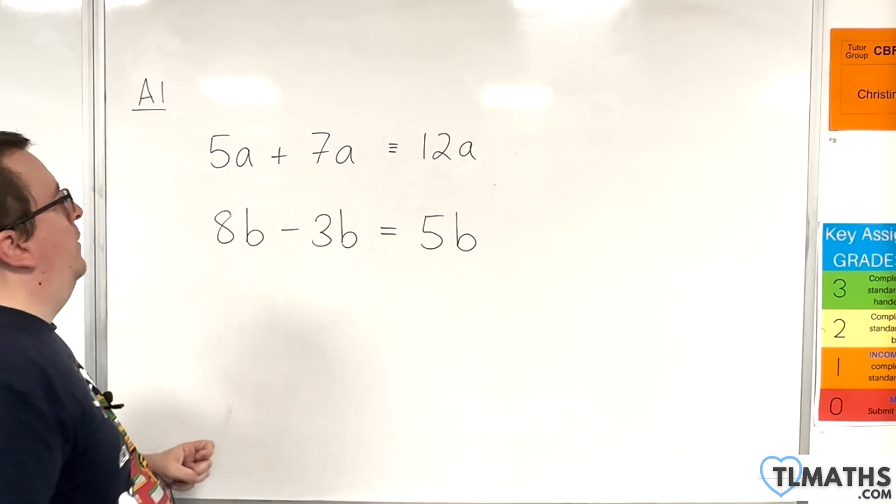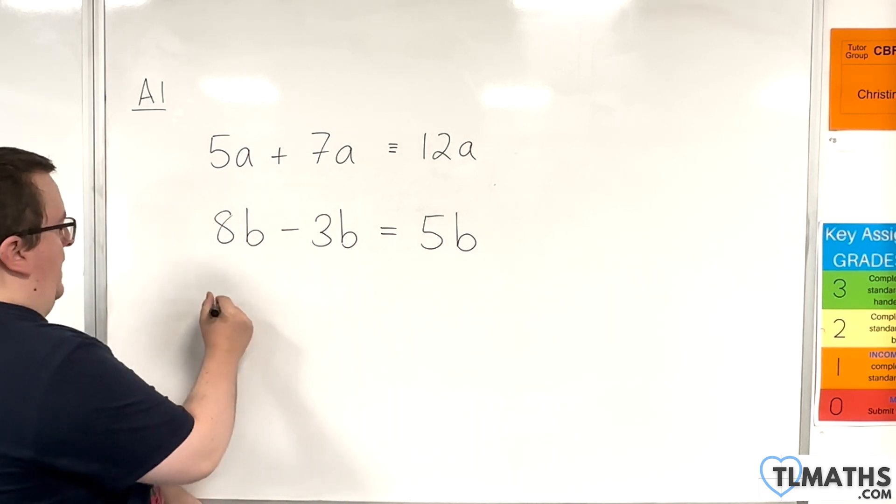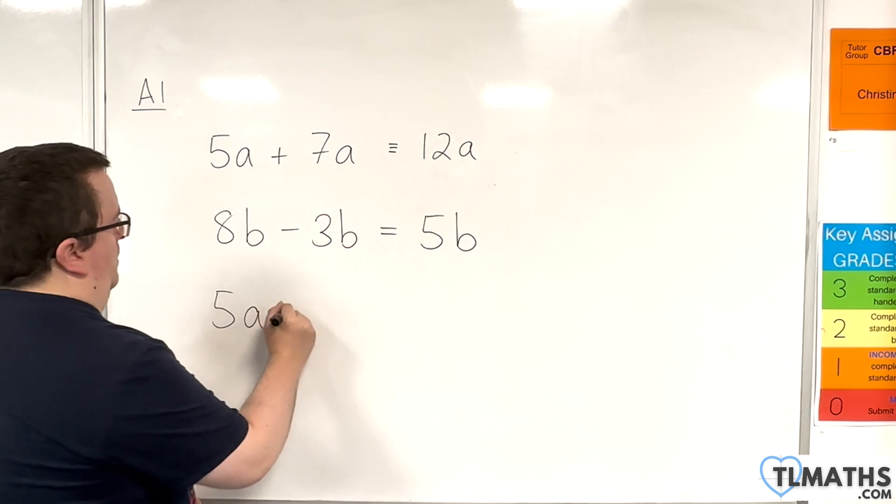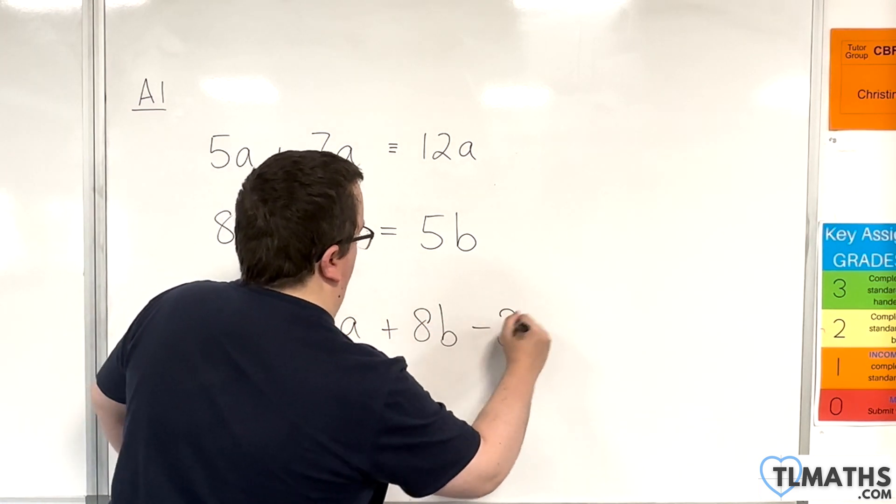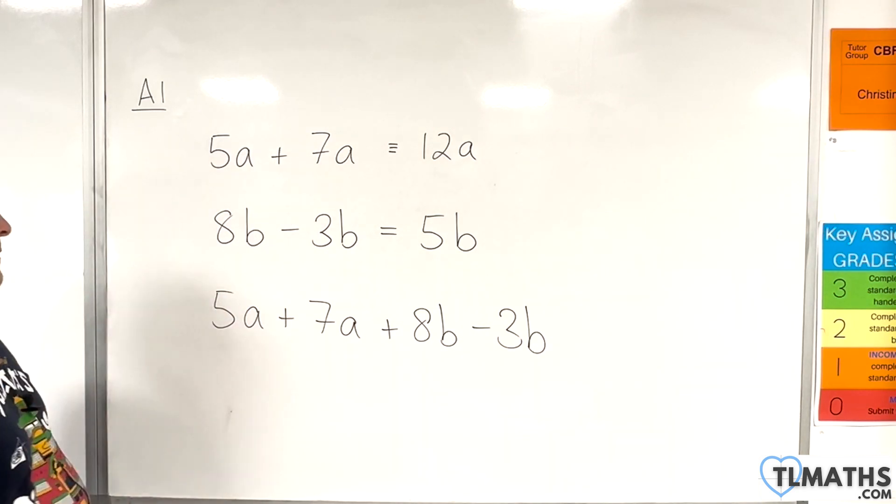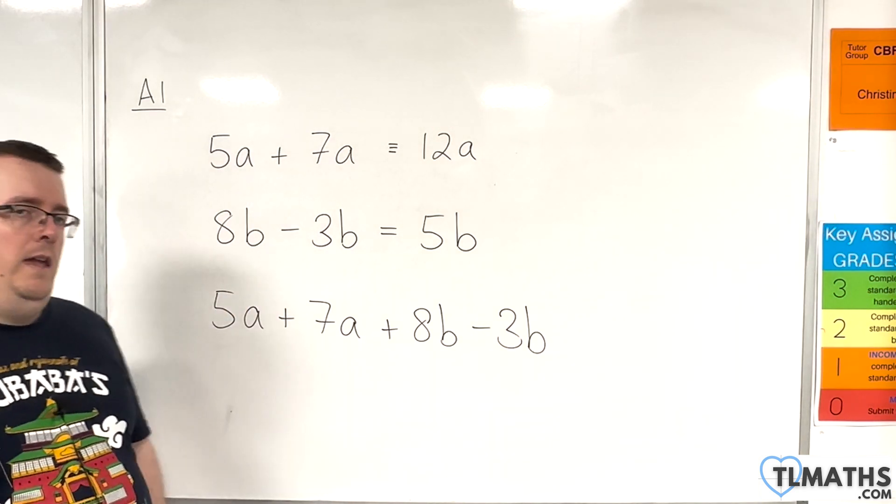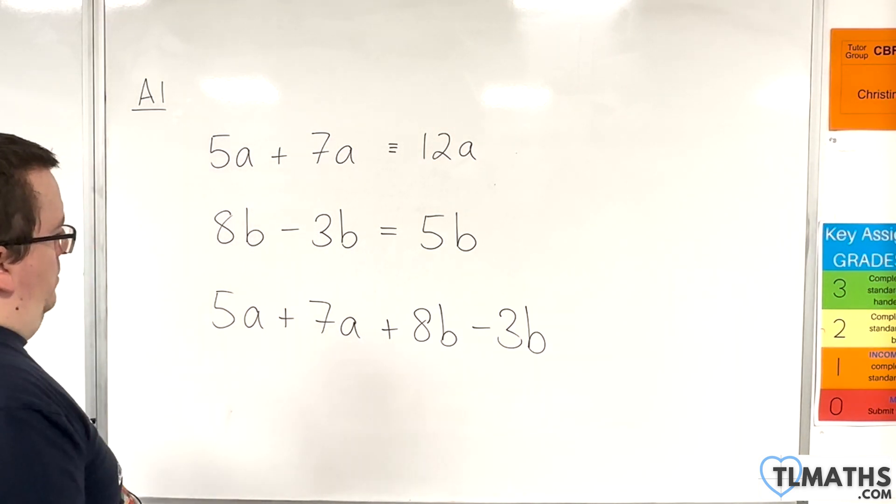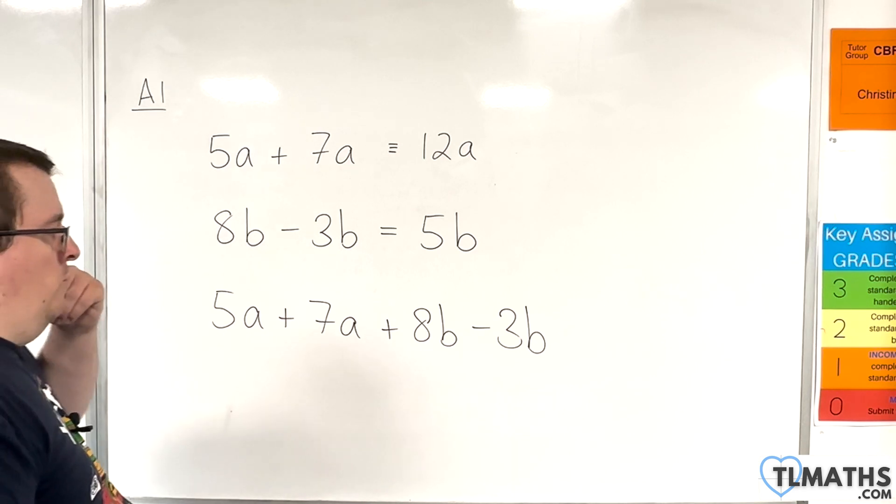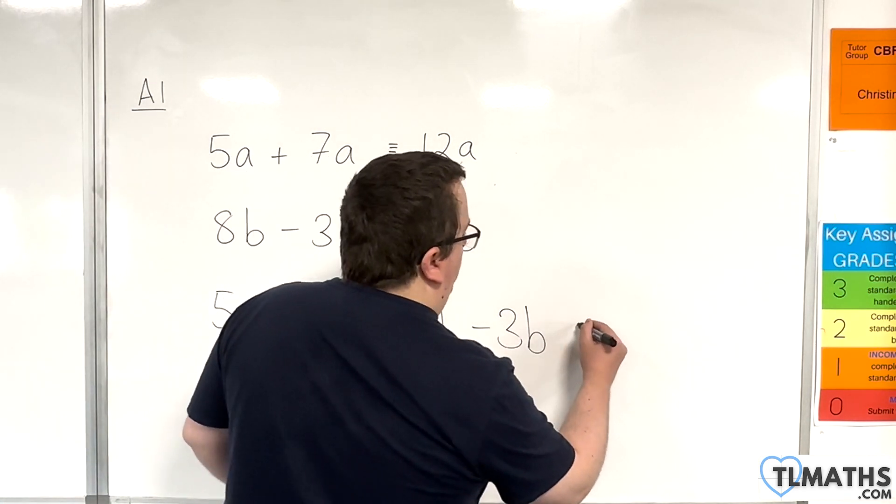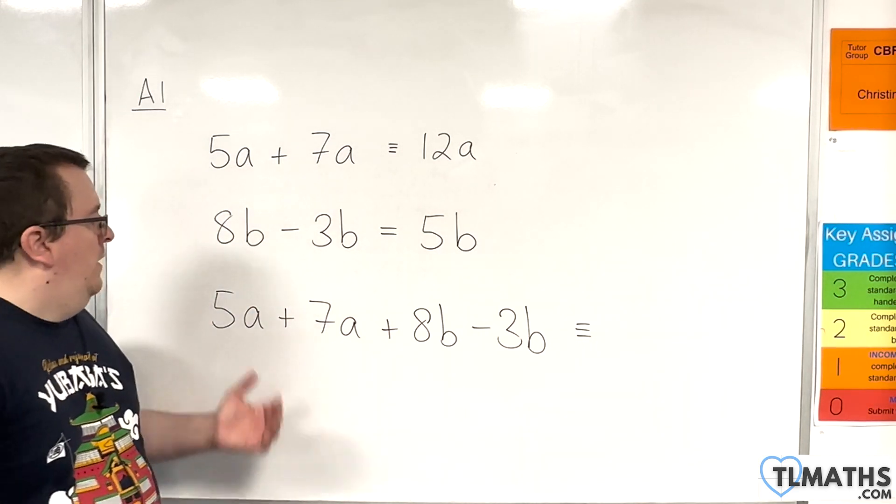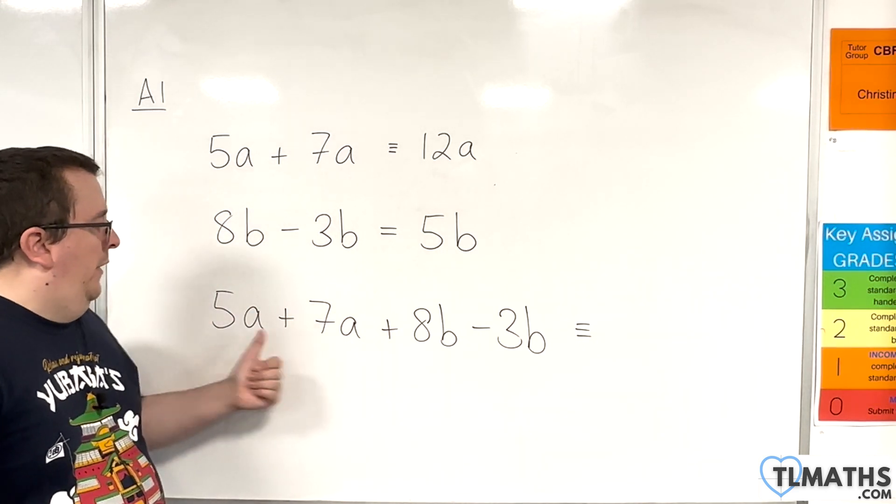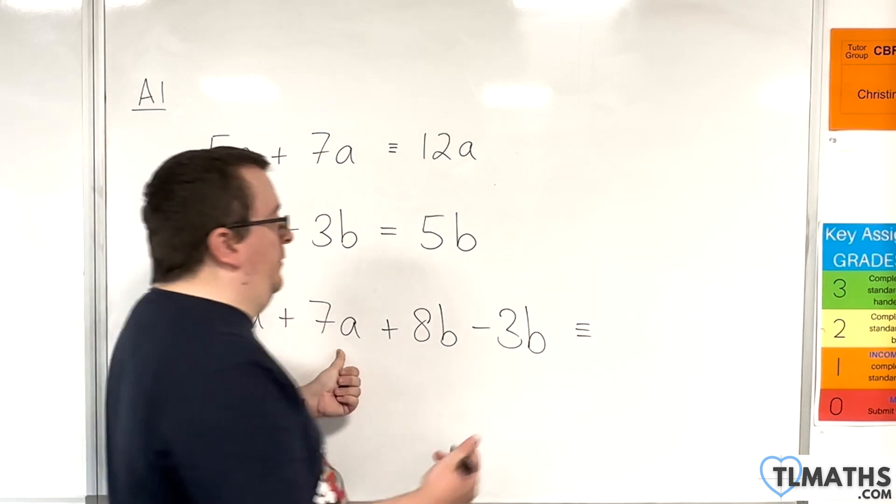Now, what about if I had this? Okay, now, if we continue with our apples and bananas idea, okay, then I've got 5 apples and another 7 apples makes 12 apples.